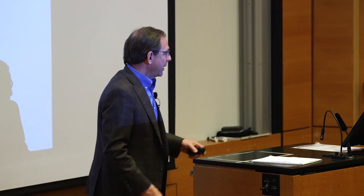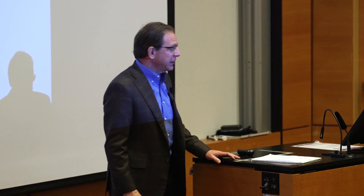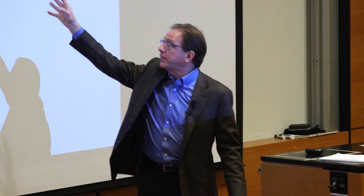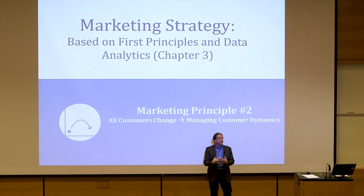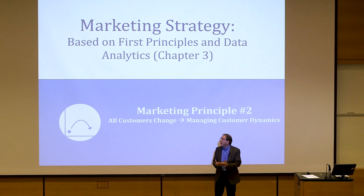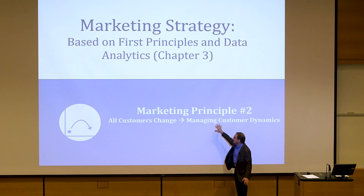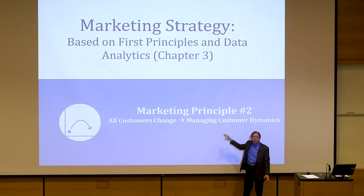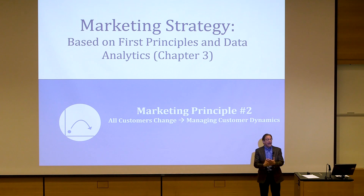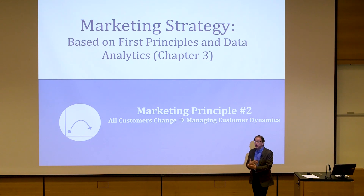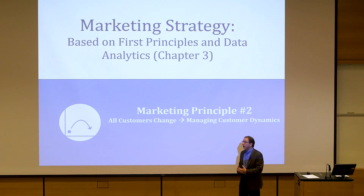That ends this session. What we went through is market principle two — all customers change. Because we know customers change, there are five different sources of customer change, and we have to manage customer dynamics. We looked at tools for doing that — probably the biggest being dynamic segmentation, making decisions using CLV analysis, and the power of using choice models.